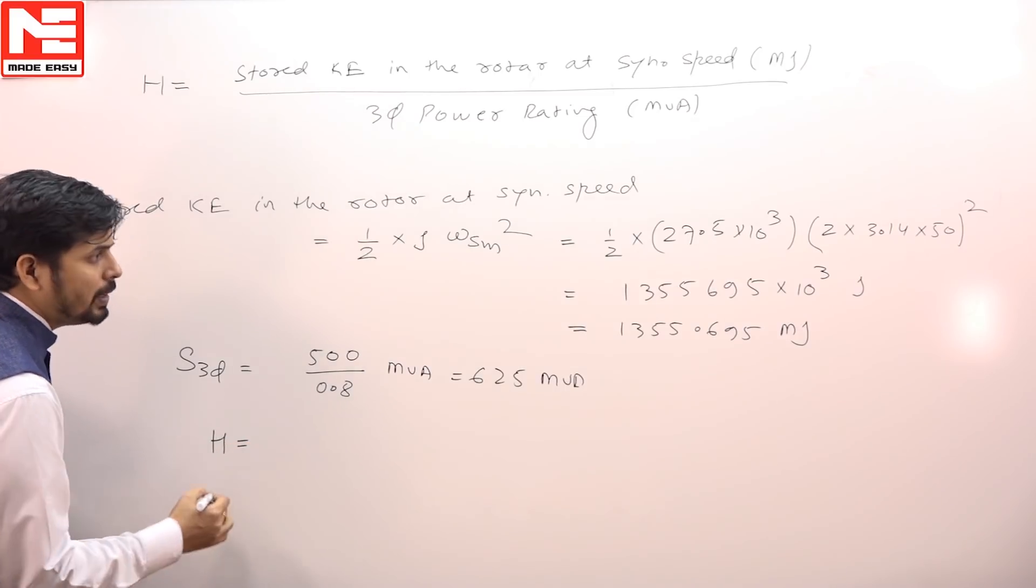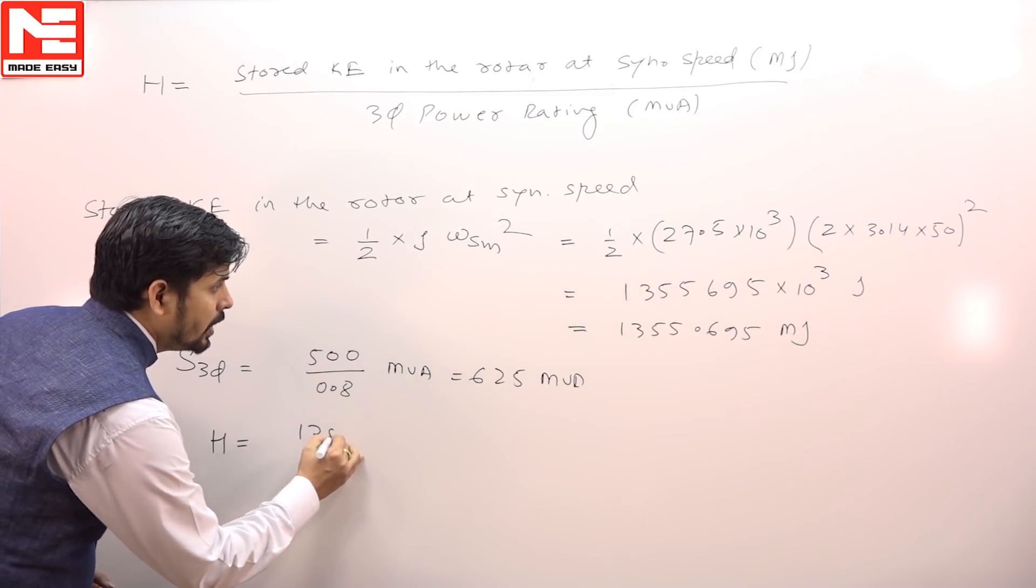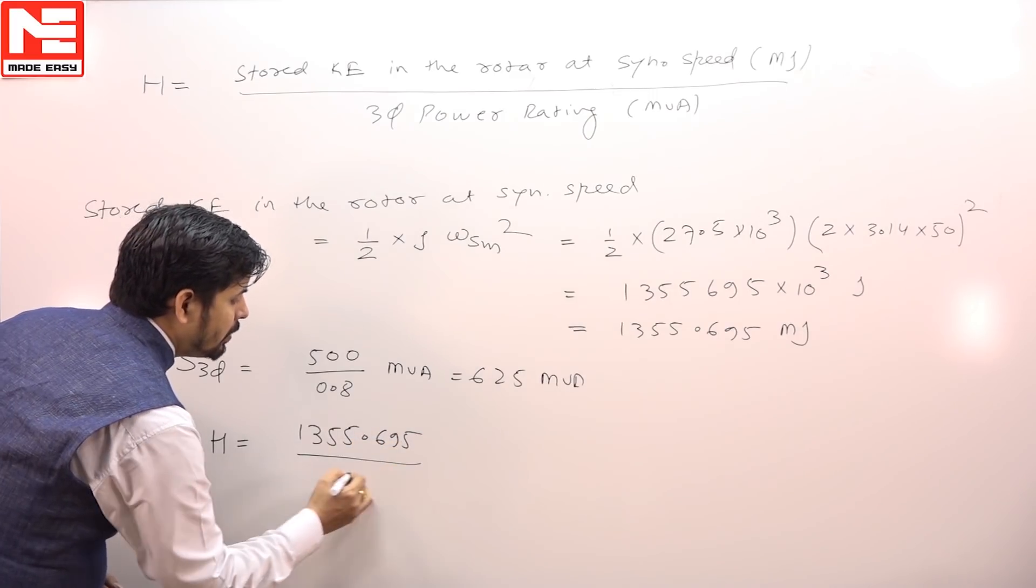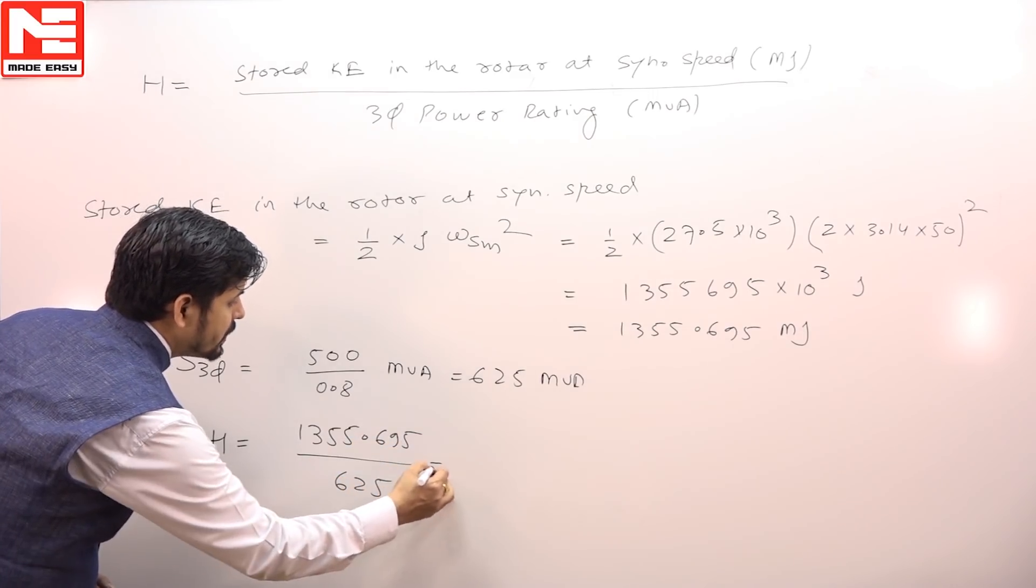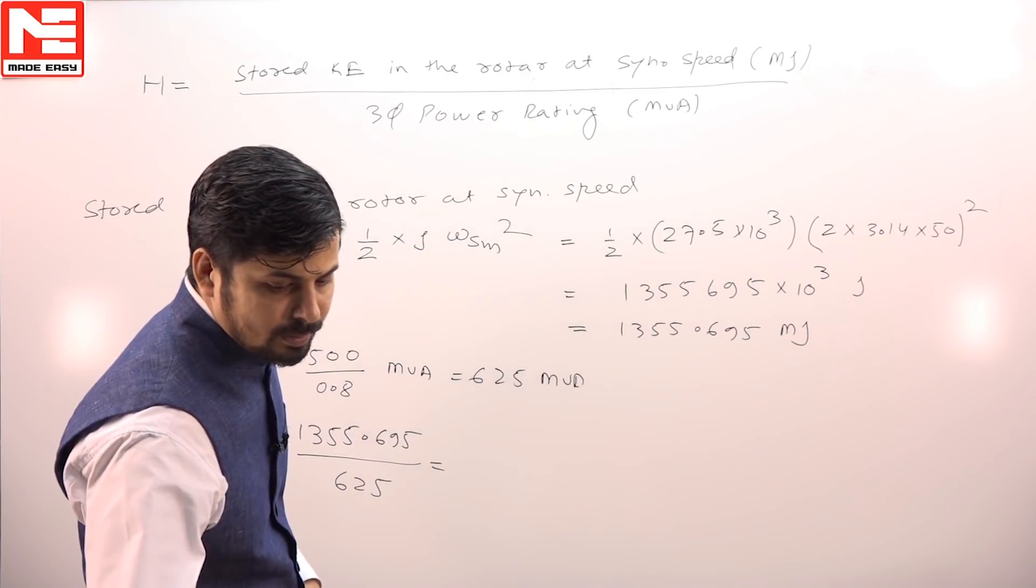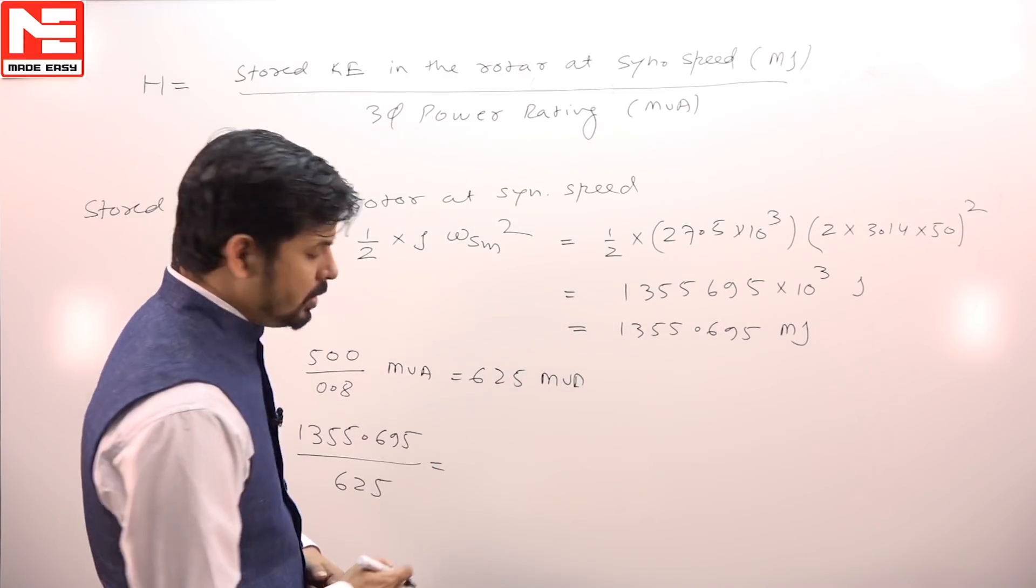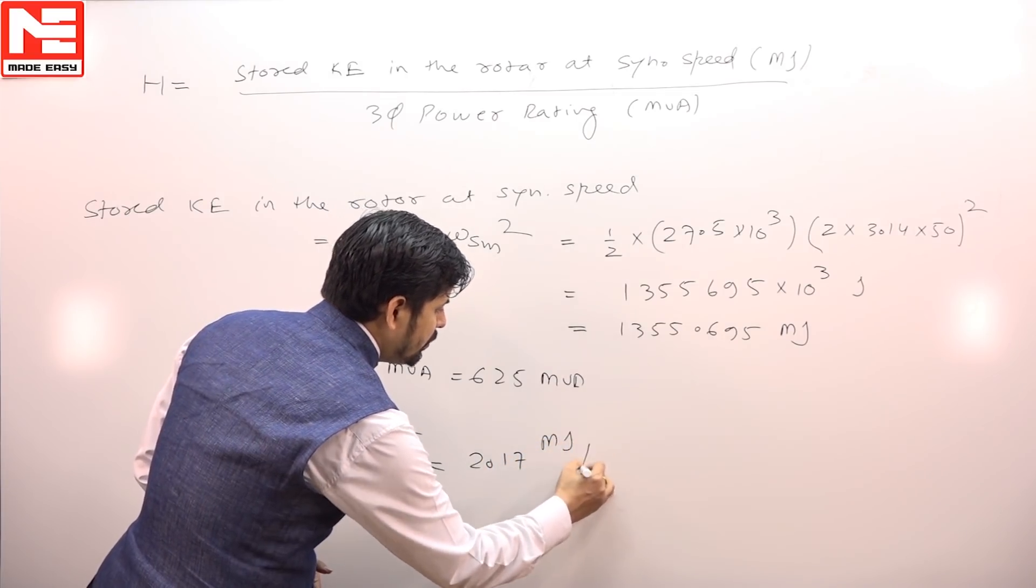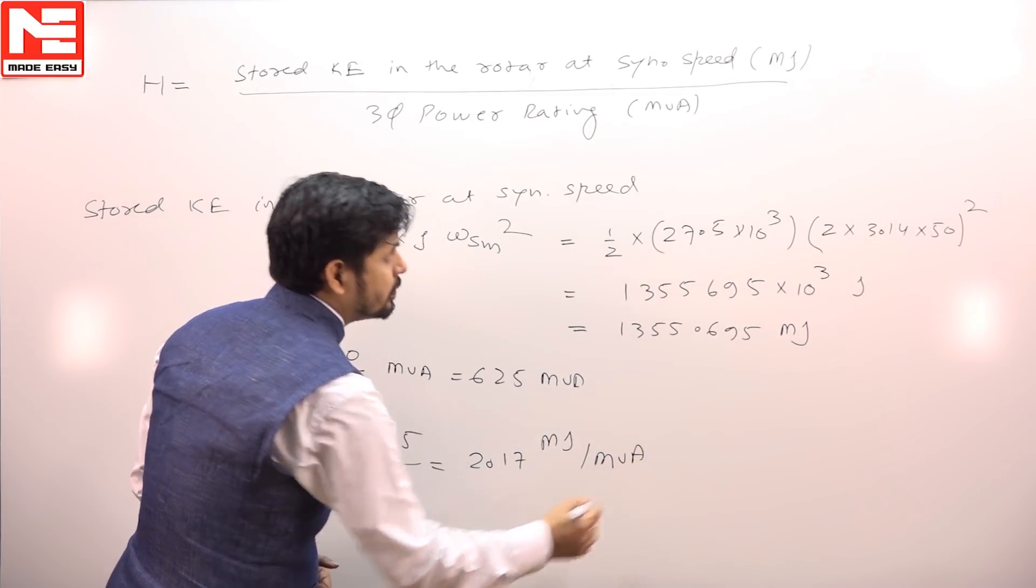Inertia constant H is simply equal to 1,355.695 divided by 625, which equals 2.17 megajoules per MVA.